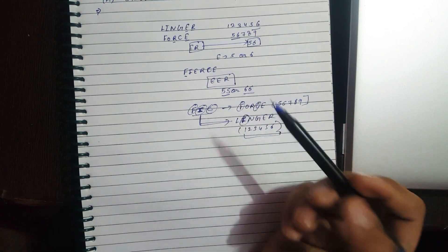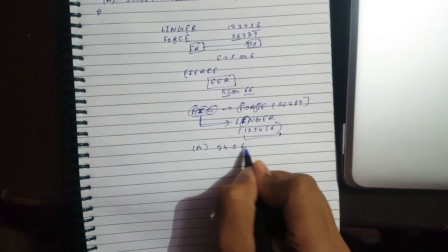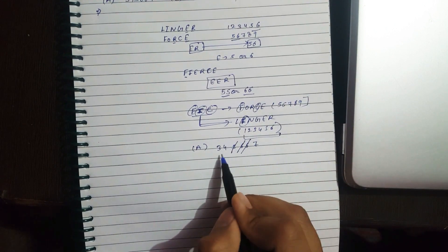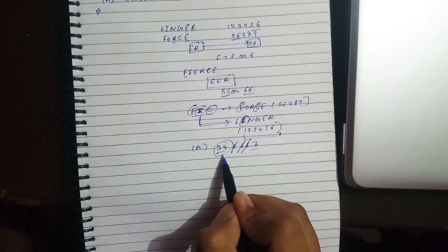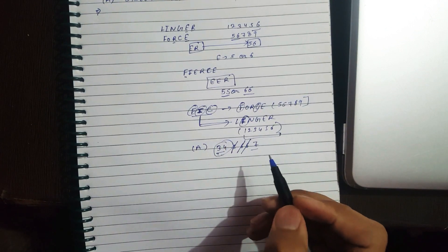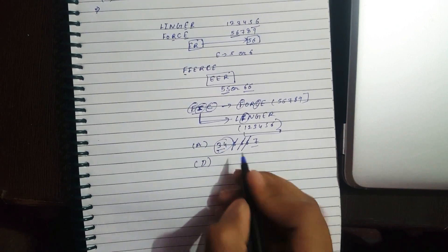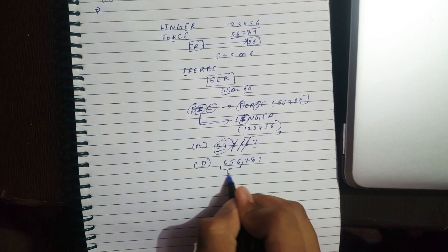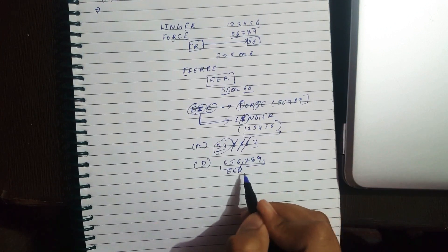We eliminate options that don't meet this criterion. Option A contains digits 3, 4, 5, 6, 6, 7 — it has two digits from 1–6, so we eliminate it. Option D contains double 5 and double 6 for E and R, plus 7, 8, 9 — it has no digit from 1–6 for the remaining letters, so we eliminate it too.